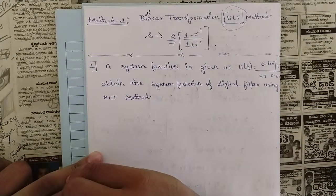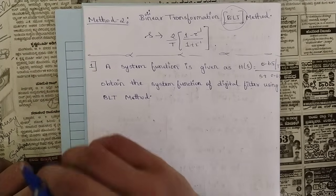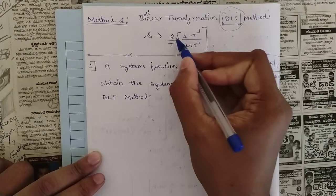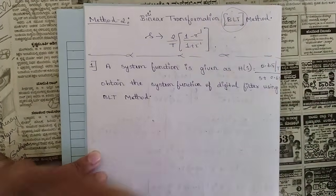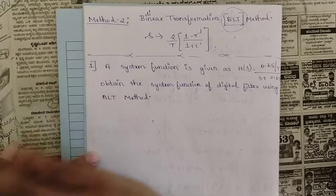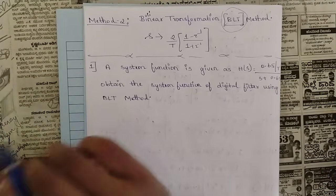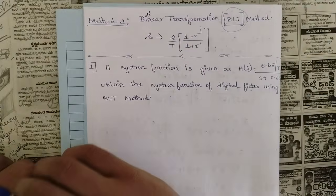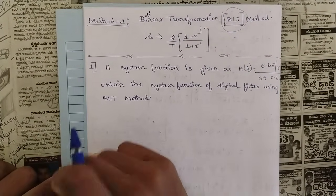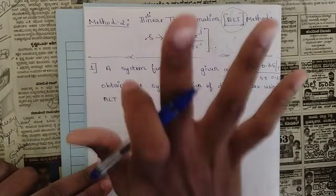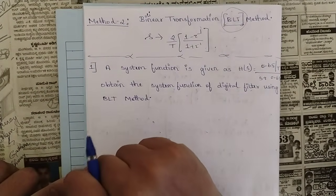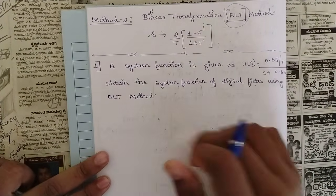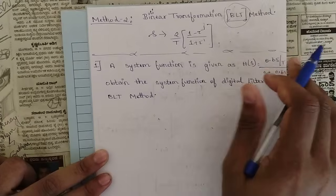In order to convert from H(s) to H(z) — that is, from analog filter to digital filter — we simply substitute the value of s in the equation as (2/T) × (1 − z⁻¹)/(1 + z⁻¹) and solve. Wherever s appears, put this term and it automatically converts to H(z). Then simplify the equation as much as possible — just substituting without further simplification won't get you marks.